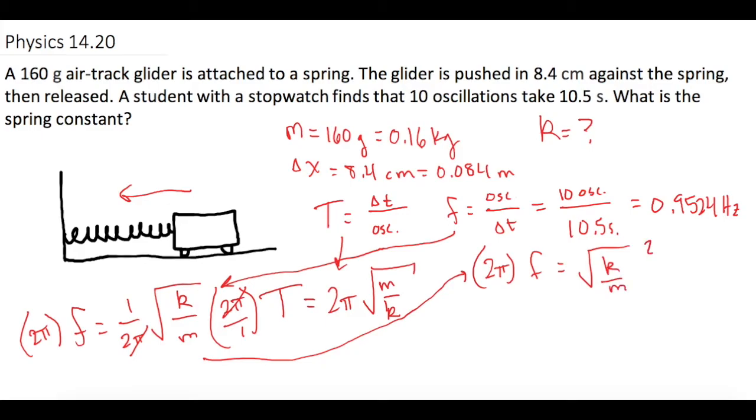Now we'll square both sides of the equation. So now we have 2π times the frequency squared is equal to k divided by m.